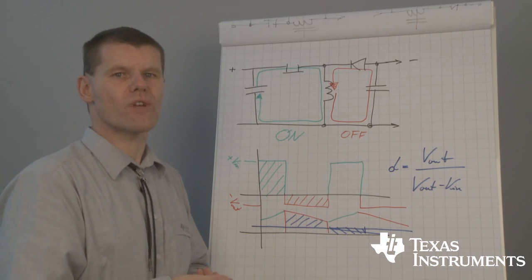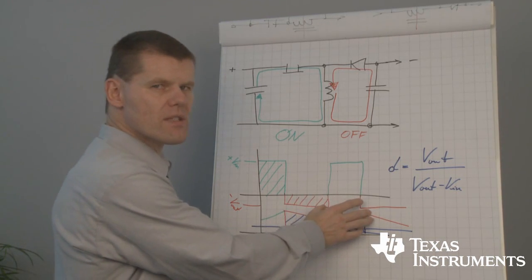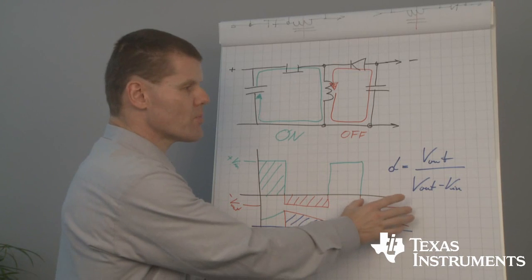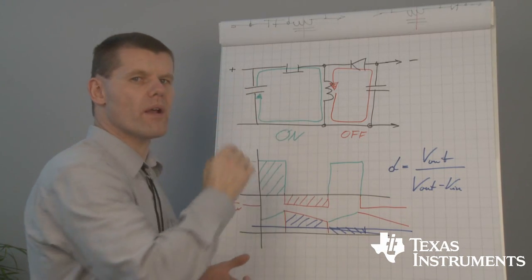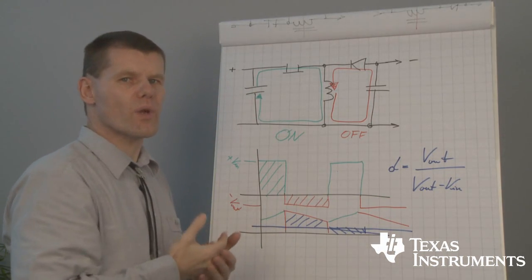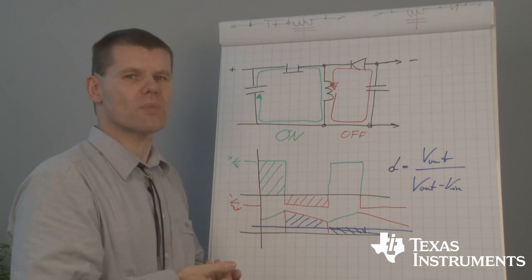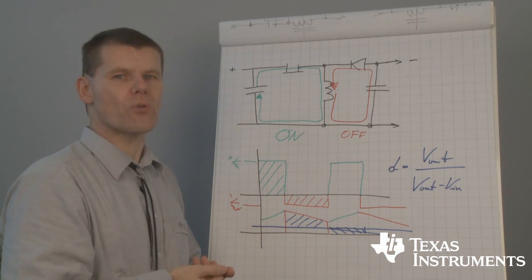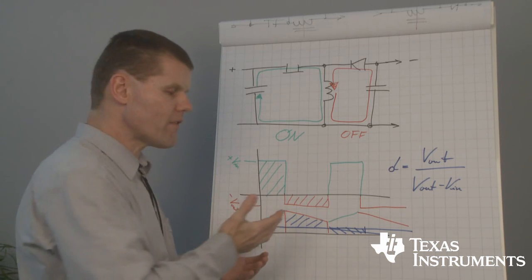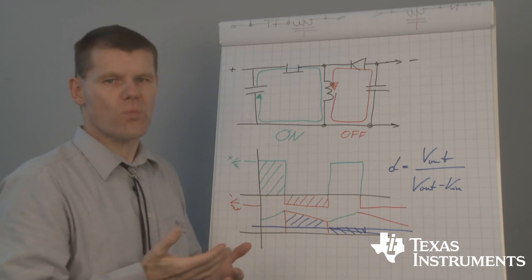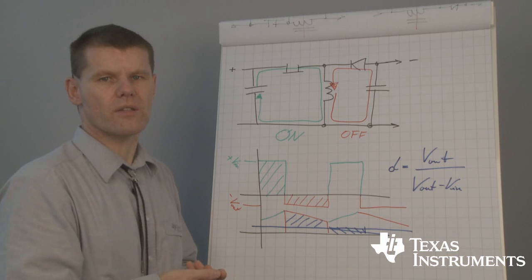And as you already know, when energy is transferred to the output while the switch is open, we have a right-half-plane zero in continuous conduction mode. So our bandwidth is limited, roughly in a range of 1 kilohertz to a maximum of 10 kilohertz.